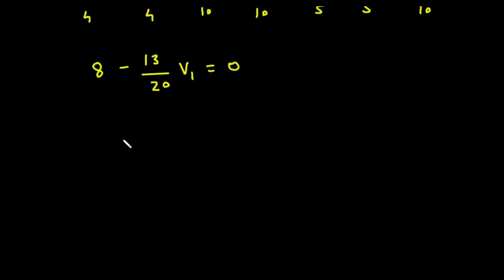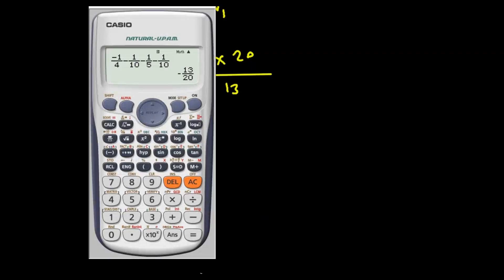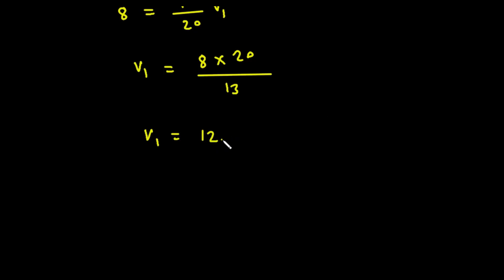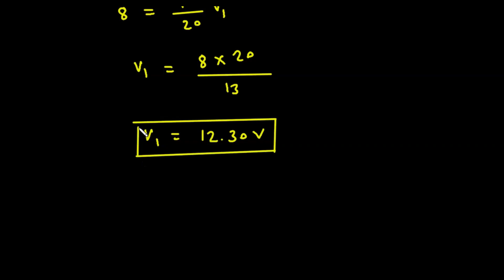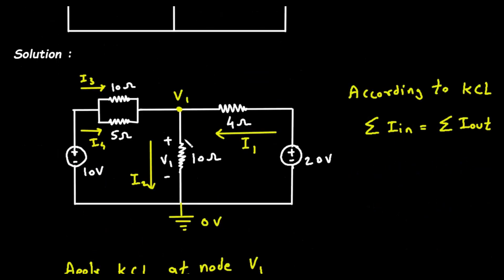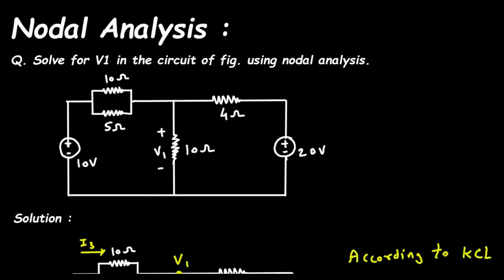Rearranging: 8 = (13/20)V1, so V1 = (8 × 20) / 13 = 12.30 volts. Therefore, the voltage V1 across the 10 ohm resistor is 12.30 volts.